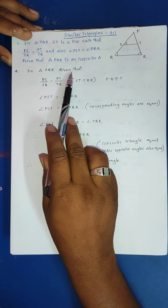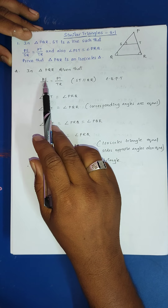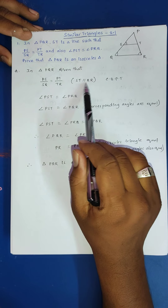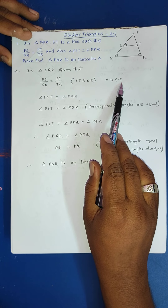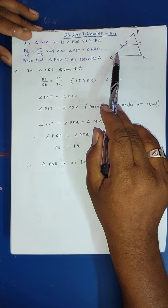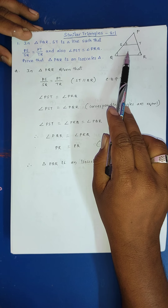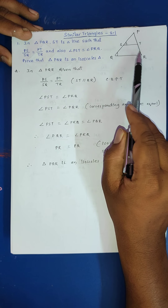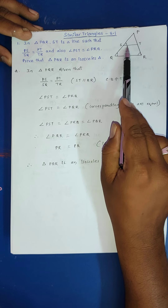In triangle PQR, given that PS by SQ is equal to PT by TR. If these are in the same ratio, then we confirm that ST is parallel to QR, using the converse basic proportionality theorem. Now, angle PST is equal to angle PRQ as given in the problem. Using these parallel lines, we can say that angle PST is equal to angle PQR — these are corresponding angles, so these two angles are equal.